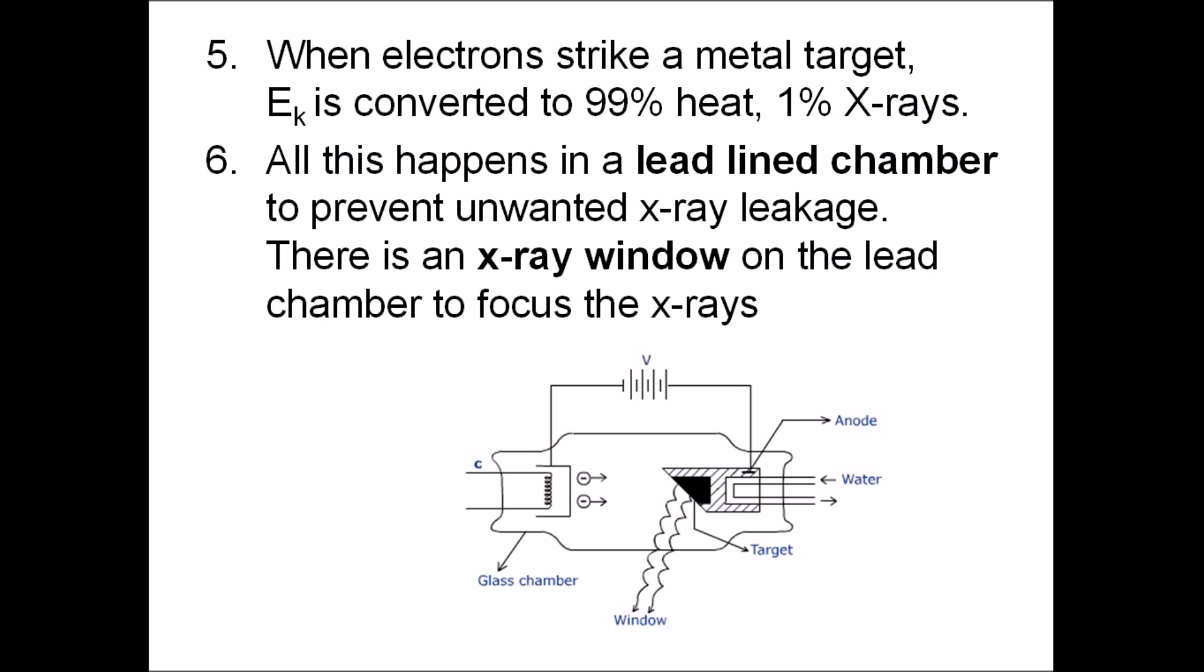As soon as electrons strike the tungsten target, 99% of kinetic energy is converted to heat energy but 1% of energy is released as X-rays. The lead lined chamber has an X-ray window which X-rays come out of. Rays are focused by the angle that tungsten target is placed at.